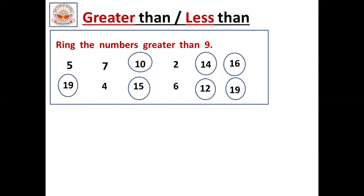Is it clear, children? Did you understand? After 9, what are the numbers that will come? For those numbers we should circle it — those numbers are greater than 9. Those are big numbers compared to 9. So: 10 is greater than 9, 14 is greater than 9, 16 is greater than 9, 19 is greater than 9, 15 is greater than 9, 12 is greater than 9, and 19 is greater than 9.